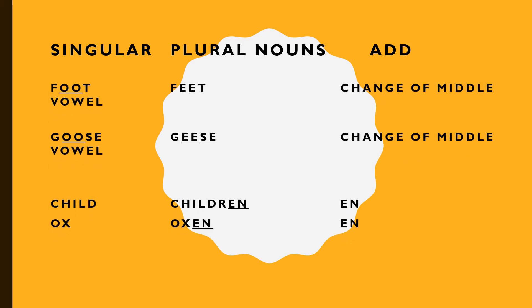Another way to change from singular to plural is by changing the vowel in the middle of the word. For example, 'food' becomes 'feed' — the 'oo' changes to 'ee'. Similarly, 'goose' becomes 'geese' — again, 'oo' changes to 'ee'.